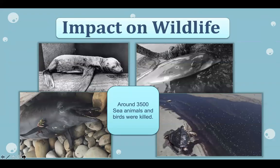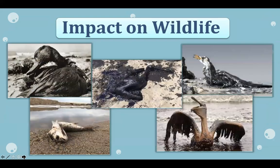The spill had a significant impact on marine life in the channel, killing an estimated 3,500 seabirds as well as marine animals such as dolphins, elephant seals, and sea lions. The feathers of the birds were plastered in oily muck and the corpses of seals and dolphins washed in with the tides.